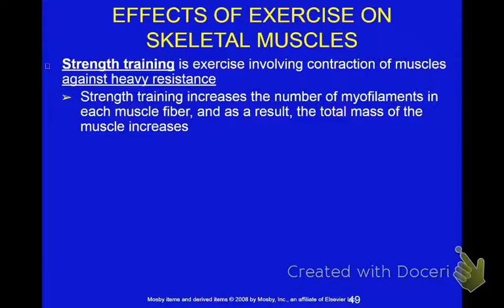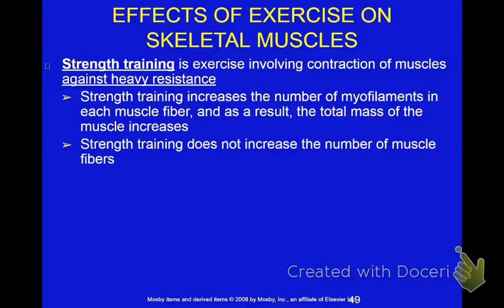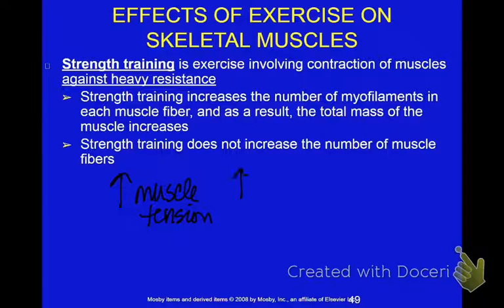Larger muscles mean each muscle can have more power. This is achieved by increasing the diameter or the size of each individual muscle cell. The number of muscle cells you have in your body is genetically determined — through training and exercise you are not changing the number of muscle cells. What causes the bulking up or the increase in the size of a muscle cell is the muscle tension being placed on it. An increase in muscle tension leads to an increase in protein synthesis.